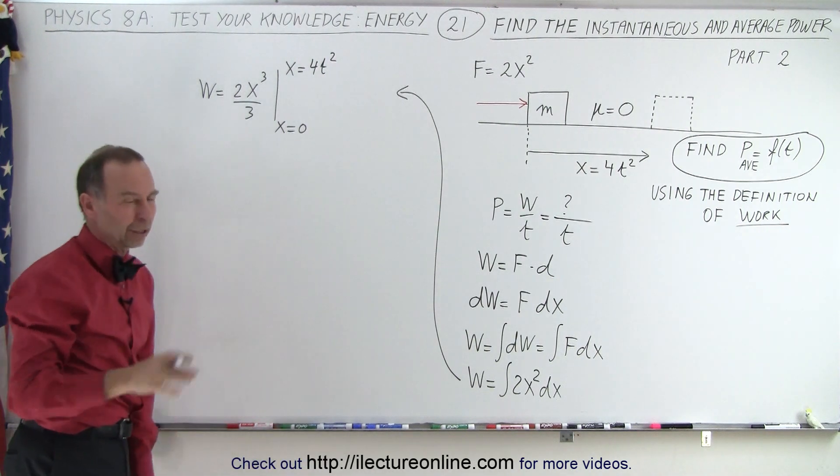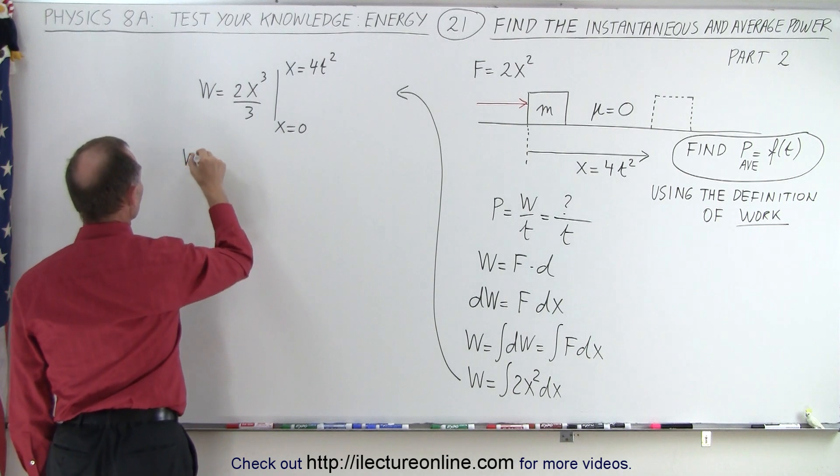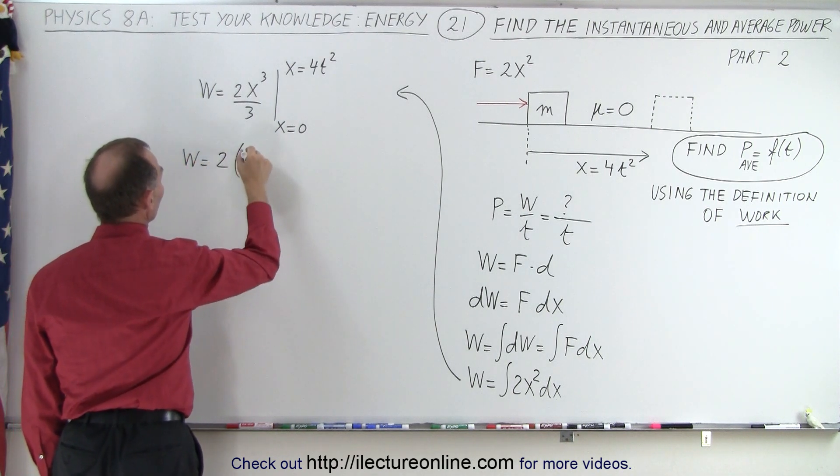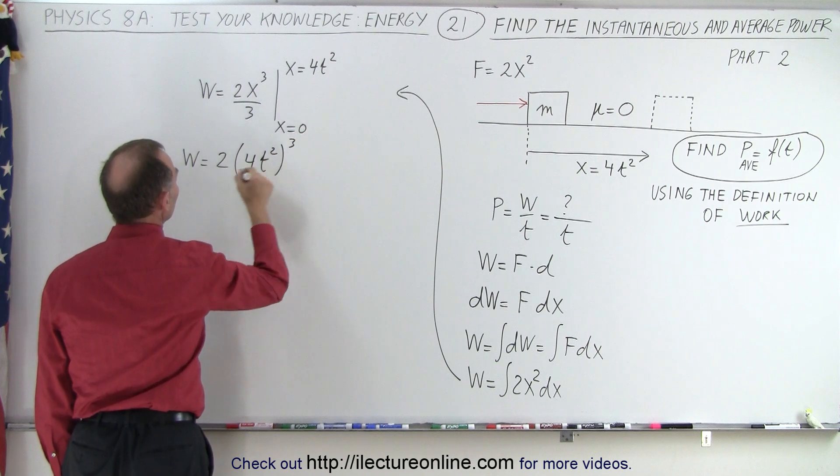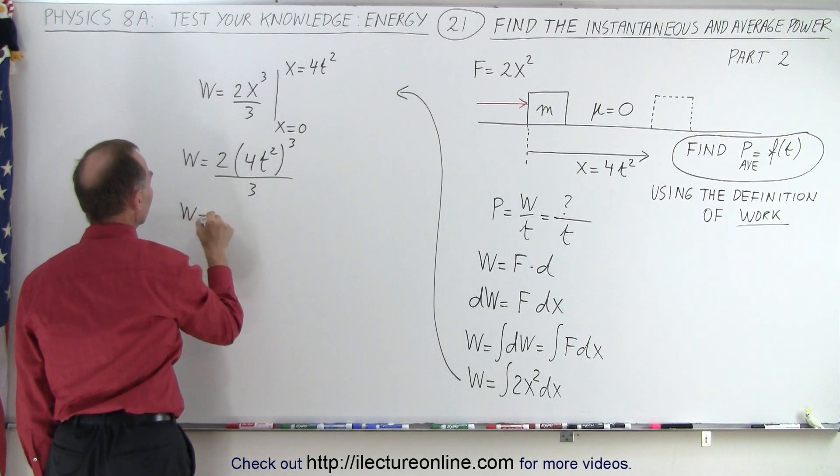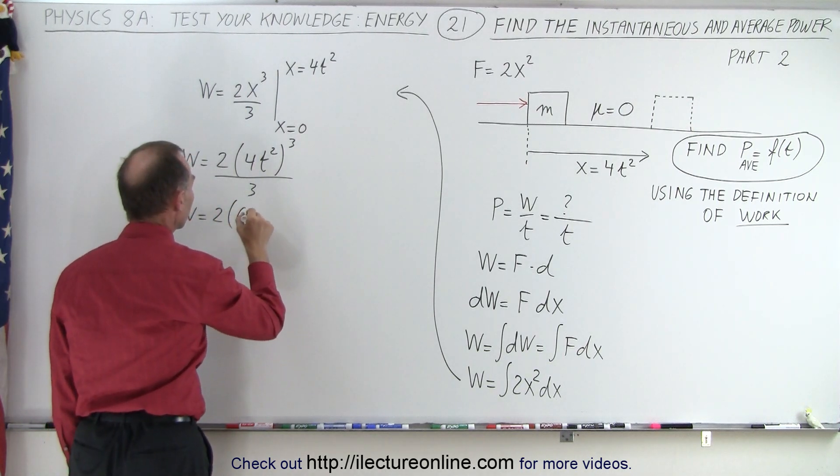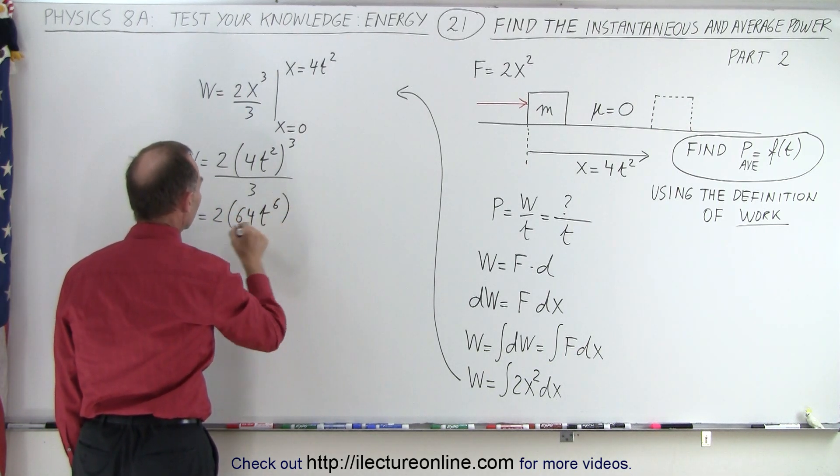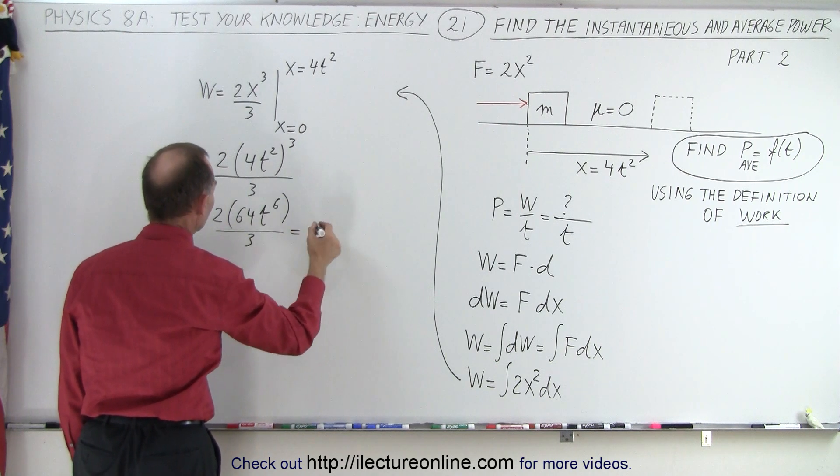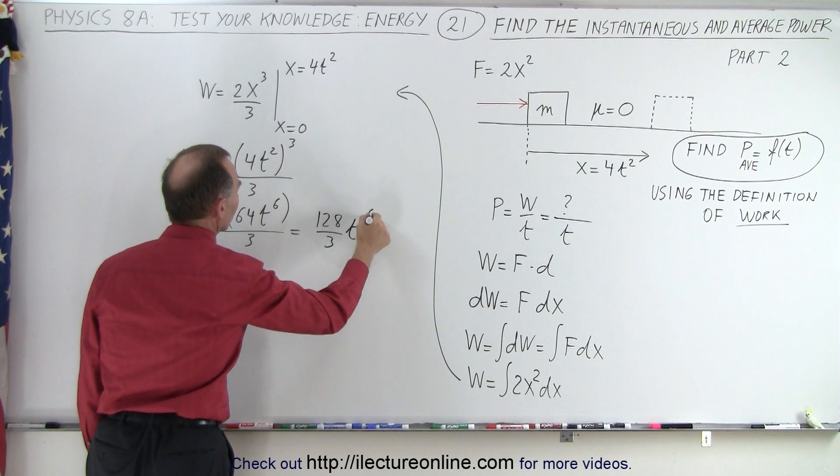Of course, when we plug in the lower limit, we get nothing. When we plug in the upper limit, we get the following. Then work is equal to 2 times (4t²)³ divided by 3. Now, that means that work is equal to 2 times 4³, that would be 64, times t to the sixth power divided by 3, which means that's equal to 128 divided by 3 t to the sixth.